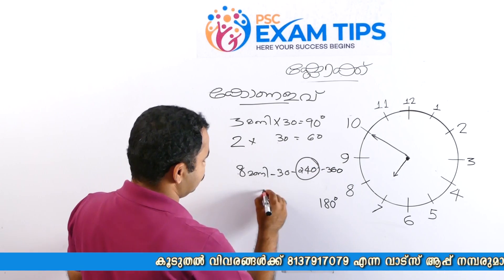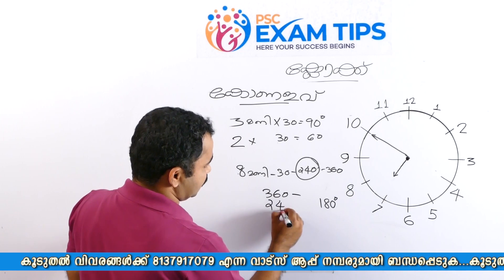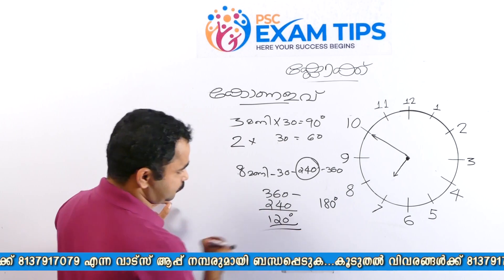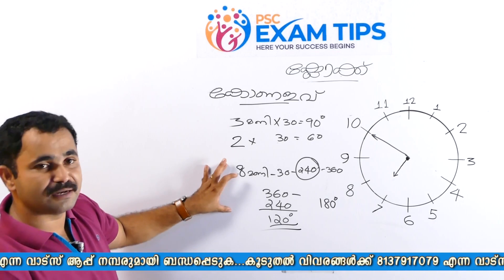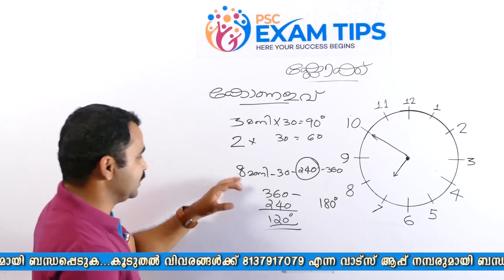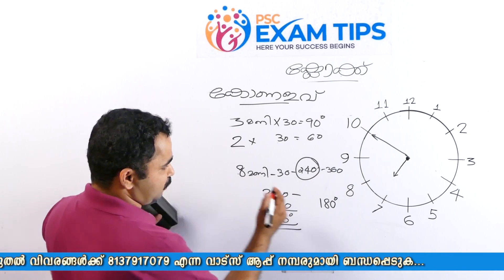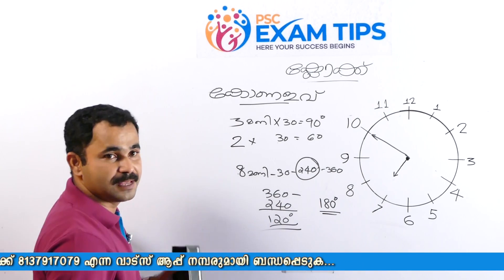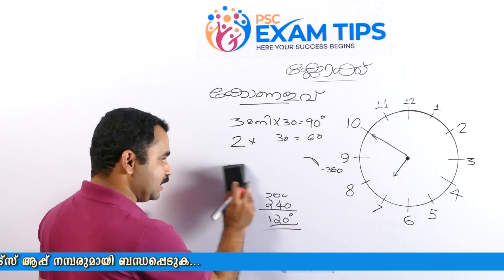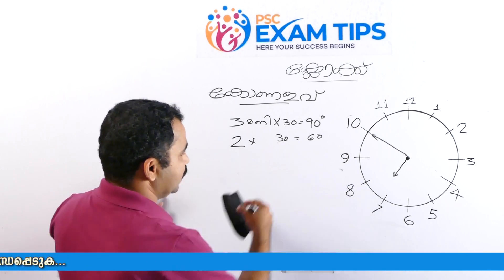That is 360 minus 2040, which is 120 degrees. This is the same thing that we have done. That is 6 degrees. That is 180 degrees.